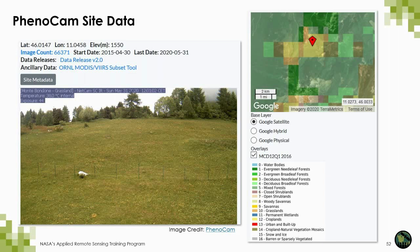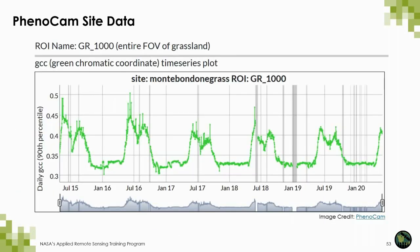You can also overlay the MODIS yearly land cover type over the Google Earth image. Here you can see that the area is mostly grassland. You can also view a time series of the site's daily green chromatic coordinate, or GCC, which is a measure of vegetation greenness — a modified version of NDVI using just the red, green, and blue bands. Since many PhenoCam sites do not have the near-infrared band needed to calculate NDVI, the GCC is an alternative. This is what you can see over multiple years for this site, presenting a comparative approach for vegetation vigor or greenness.